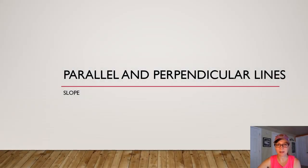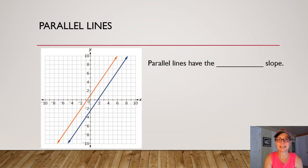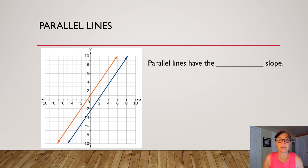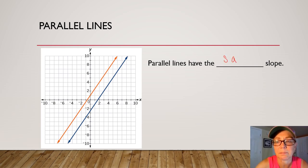Hi! This video is on parallel and perpendicular lines. You can see in the picture that we have a set of parallel lines. Parallel lines run side-by-side like railroad tracks and they don't ever intersect. Since they're slanted the same, we say that parallel lines have the same slope.